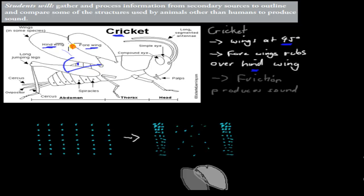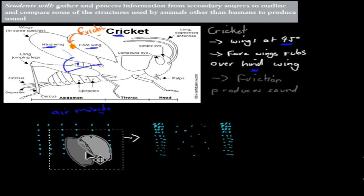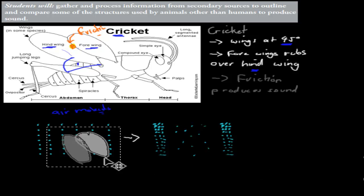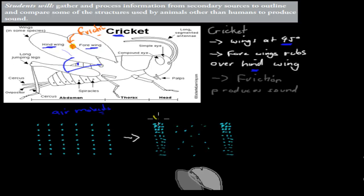That rubbing creates friction, and that friction produces enough vibration to create the compression and rarefaction patterns required to produce sound. So the air molecules produce these sound patterns because the wings rub against each other. That's what produces the sound. When you hear a cricket, it's not their head producing any sound — it's the wings.